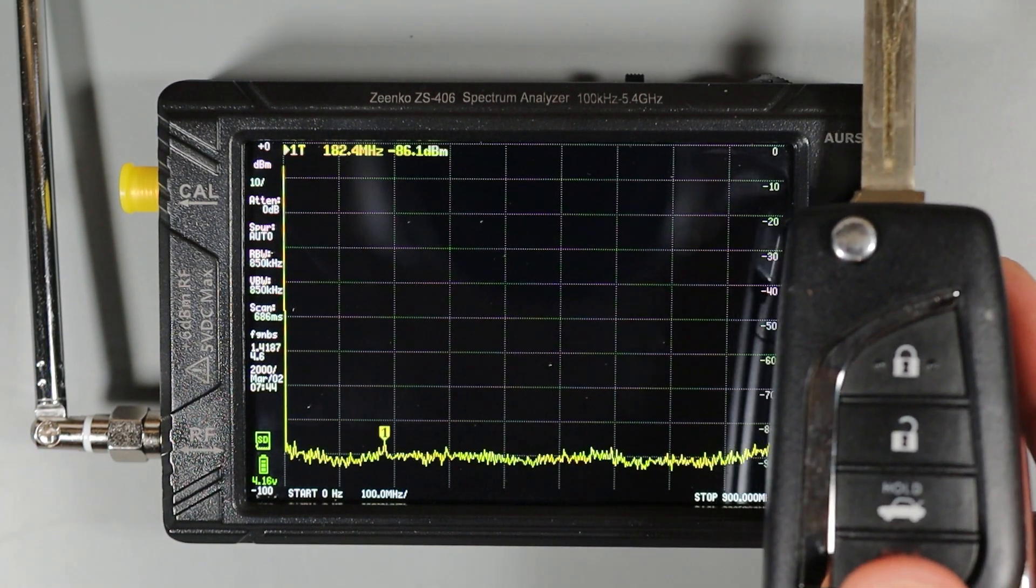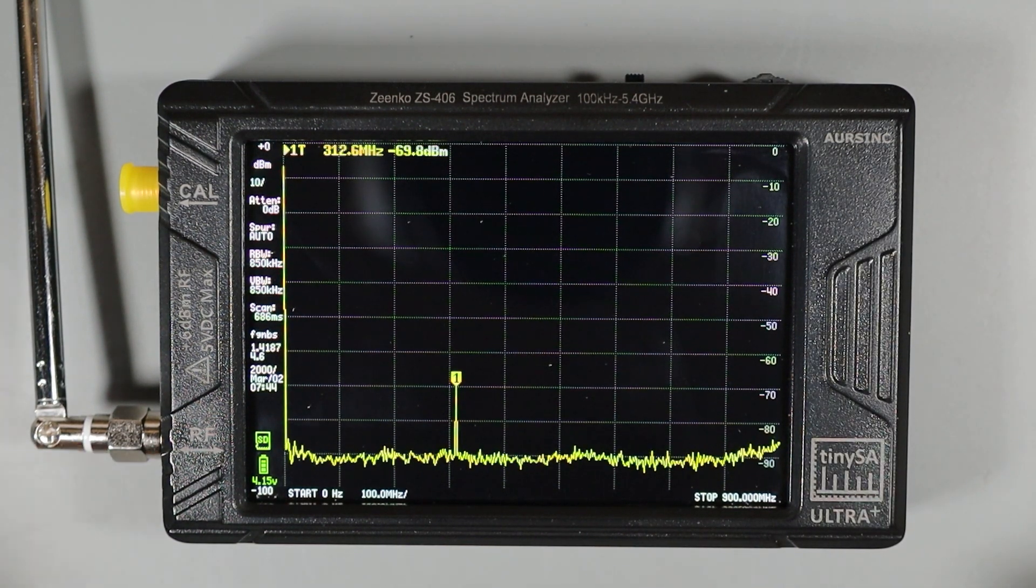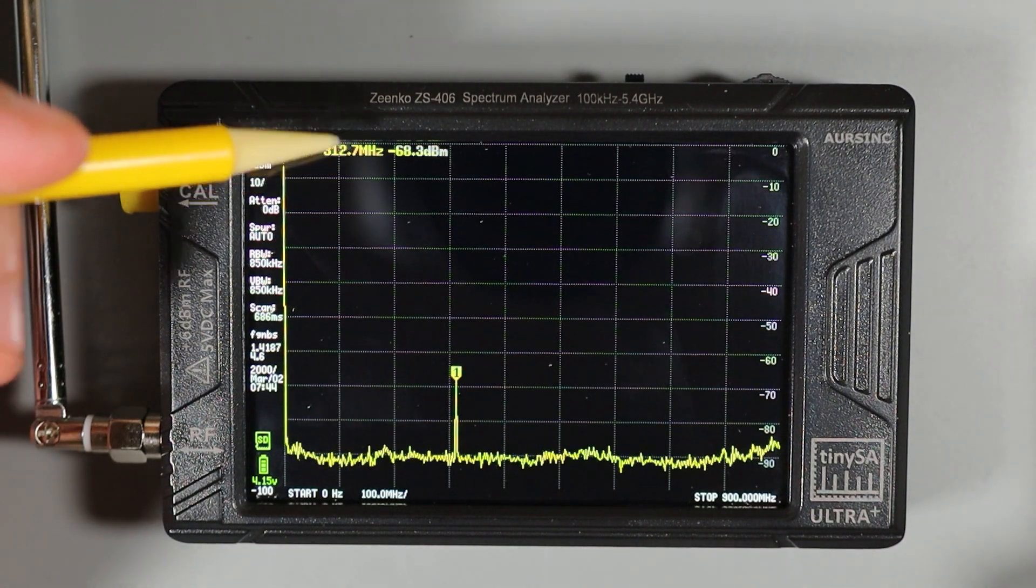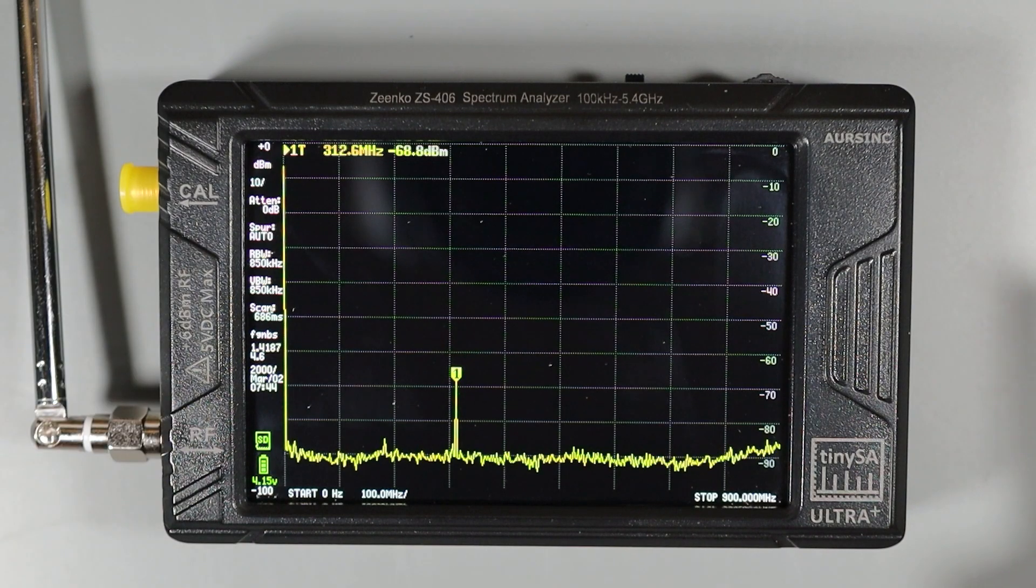Now just for comparison, I've got a second key fob from a Toyota. And if I activate this one, you can see we're getting a signal spike at 312.6 megahertz with a strength of minus 68.8 dBm.